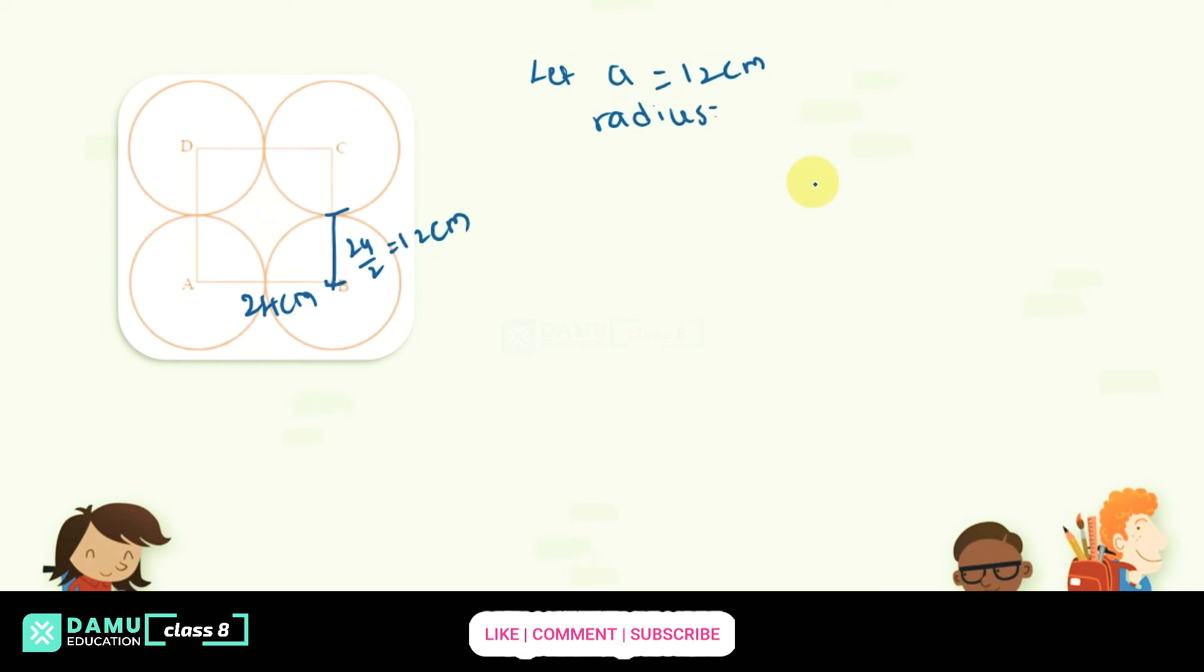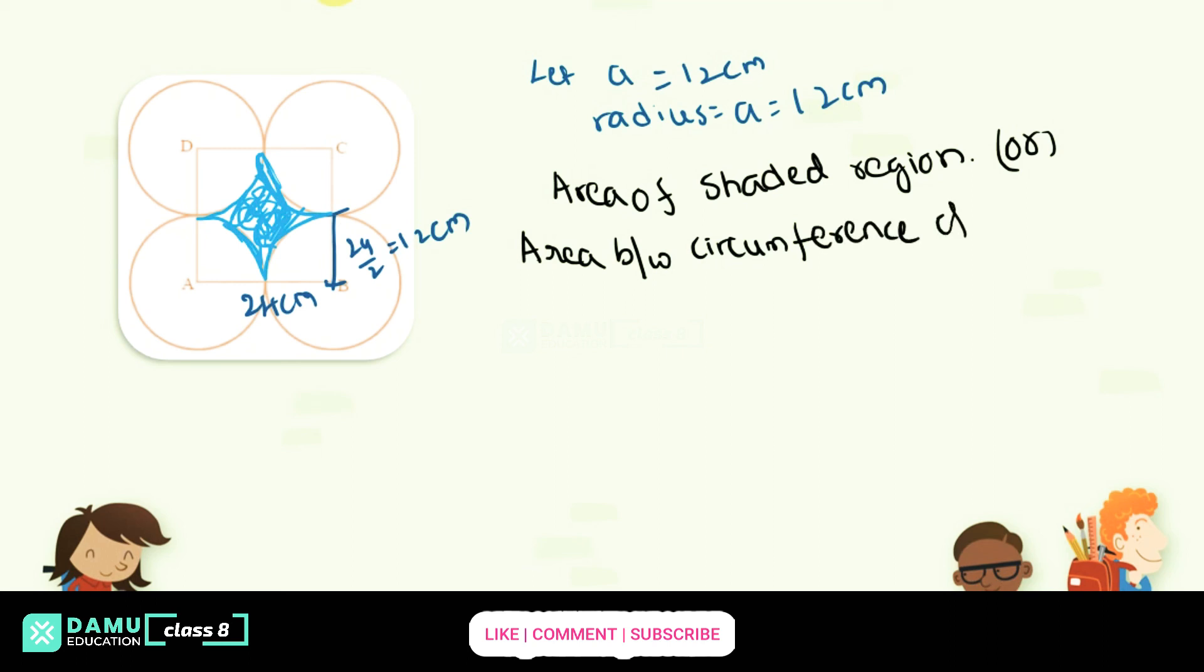So let's take, there given as each side of the square is 24 centimeter. Then what is the radius? So this is 24 by 2, that's 12. So this is 12. So let A equal to 12 centimeter, that is radius. As we calculated above, the formula is area of the enclosed figure, that is between circumferences of circles. So the area of shaded region or area between circumference of circles